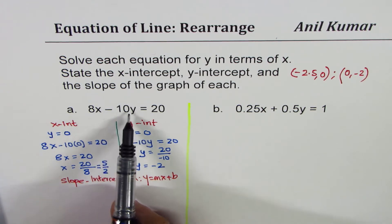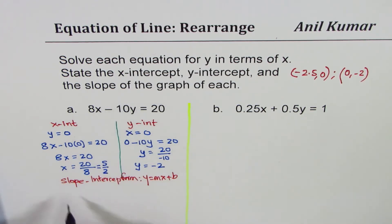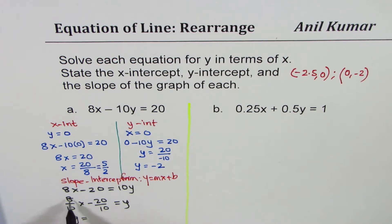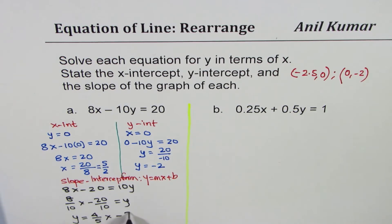Since minus 10 is with y, I'll take that on the other side, and I'll write this as 8x minus 20 equals 10y. Now we can divide by 10, so we get 8 over 10x minus 20 over 10 equals y. And so we can write y equals, simplifying this, dividing both by 2, will give us 4 over 5x, and that is minus 2.